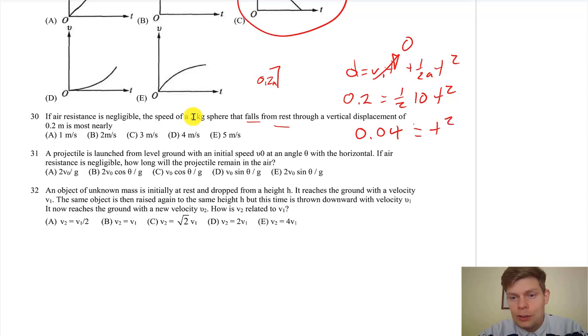So if we go and multiply this around, we got 0.04 equals t squared. Or if you take the square root of this sucker, it should be 0.2. So t equals 0.2.